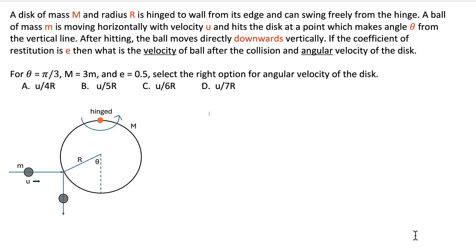Let's read out the problem first. A disk of mass M and radius R is hinged to the wall from its edge and can swing freely from the hinge — let's call this point O. A ball of mass M is moving horizontally with velocity u and hits the disk at a point which makes angle theta from the vertical line. Let's say this point is P. The coefficient of restitution is E, and after the collision the ball travels downward vertically. We need to find the angular velocity of the disk and the ball's velocity v1 after the collision.